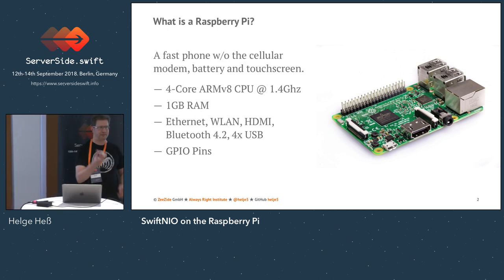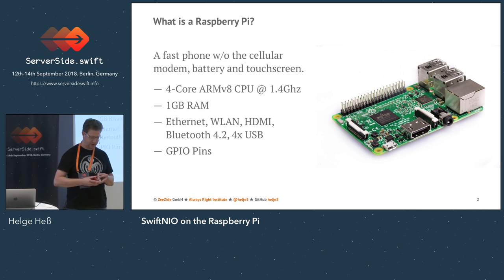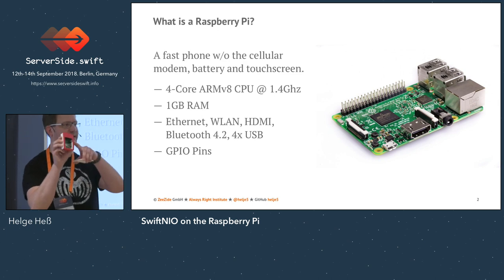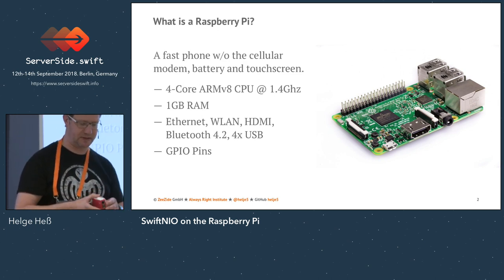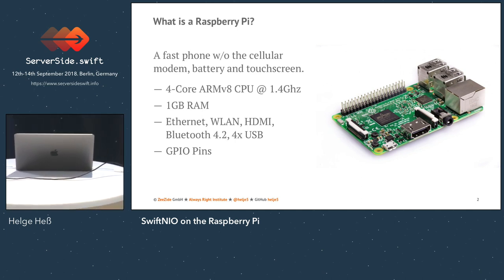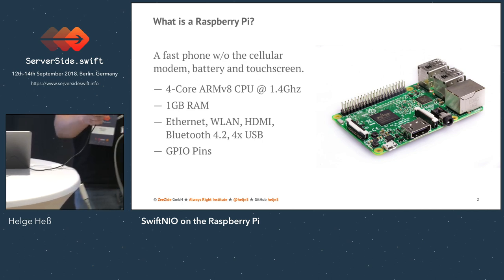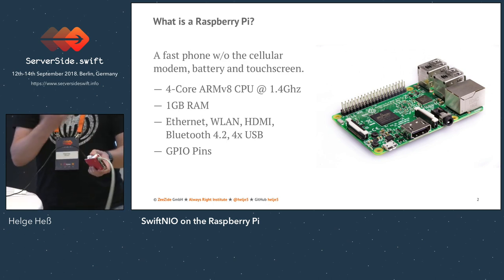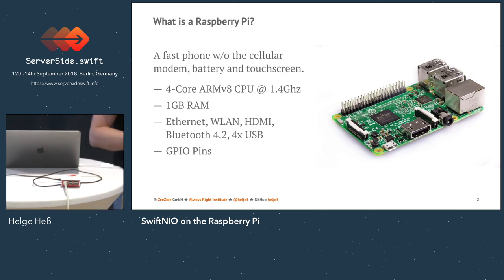So this is the Raspberry Pi. Probably some people have seen it already. Usually you always see it as a plain board, but you can buy nice cases for them so they look actually good, and you can pimp them with stickers. What is a Raspberry Pi? It's essentially a mobile phone — a fast mobile phone with a quad-core processor, but without the battery, without the LTE connectivity and without the touch display, of course.